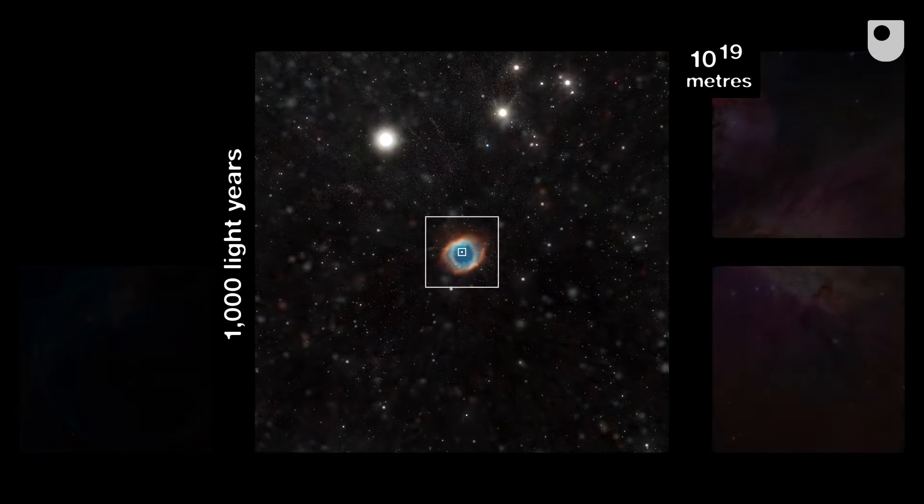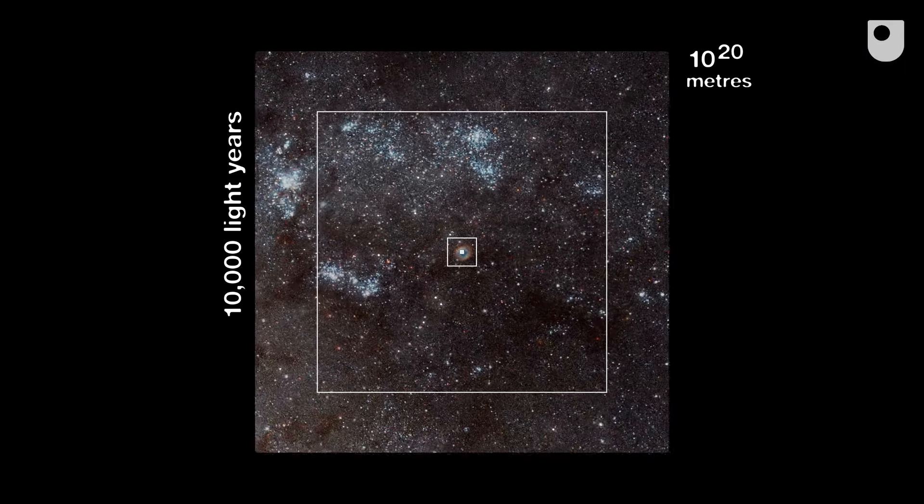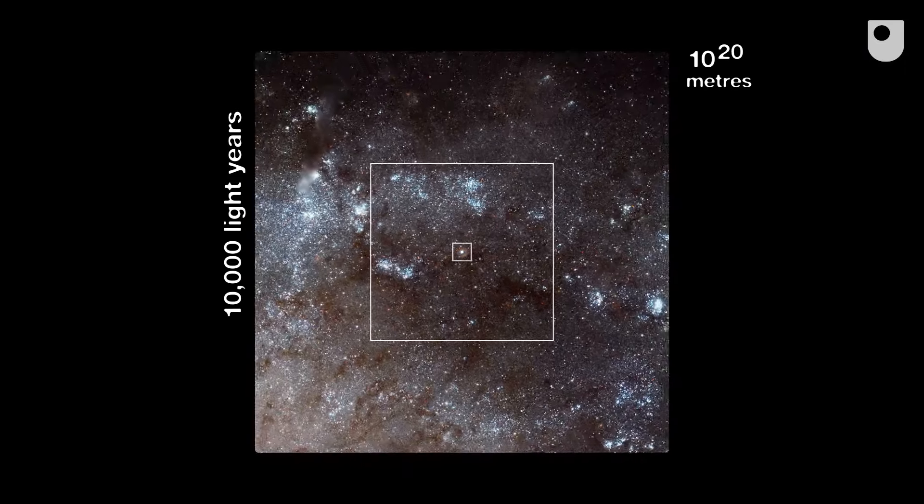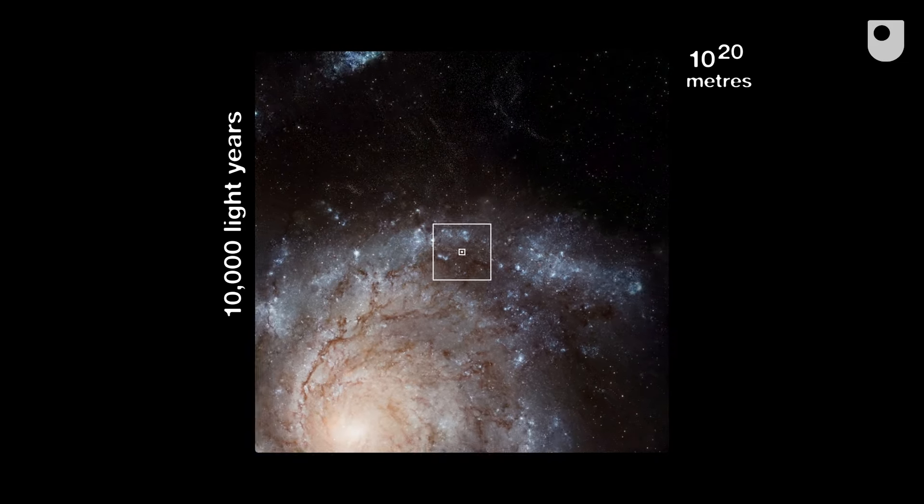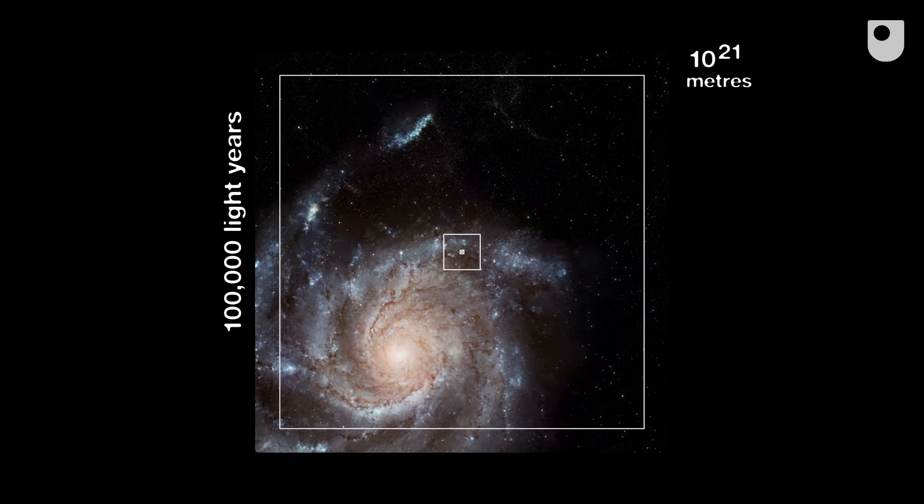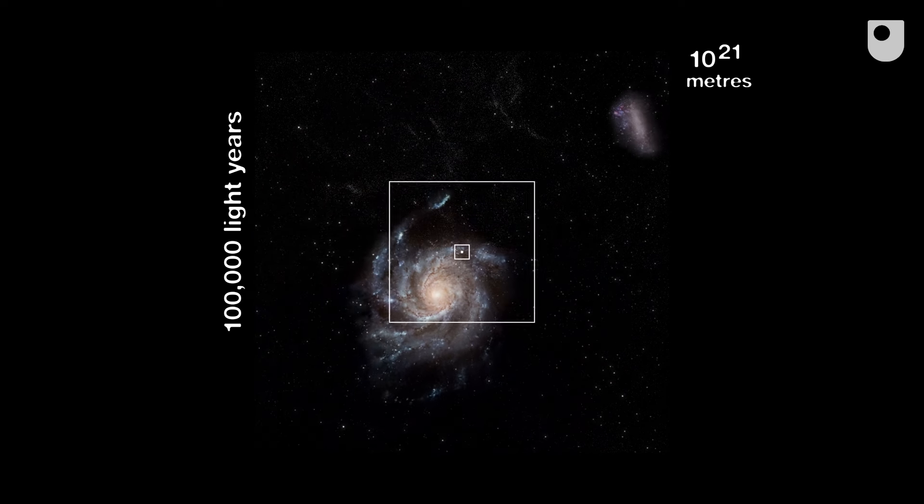As we move away, we begin to see the great flat spiral of our galaxy. A few hundred billion stars rotating around a black hole, Sagittarius A star, 4.2 million times more massive than our Sun. We now think supermassive black holes reside at the centre of nearly all galaxies.